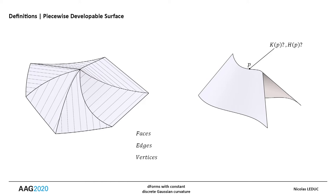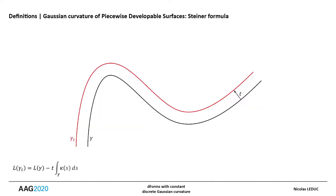Without going into the details of the demonstration, we give here the main points. This definition is based on Steiner's formula, which links the measure, the offset value, and the total curvature of a manifold.